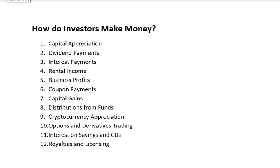How do investors make money? Investors make money through numerous mechanisms depending on the types of investments they choose. First is capital appreciation: investors make money when the value of the shares they hold increases over time. They can sell the shares at a higher price than the purchase price, realizing a profit. Second is dividend payments: some corporations pay dividends to their shareholders as a share of income, providing investors with a regular source of earnings.